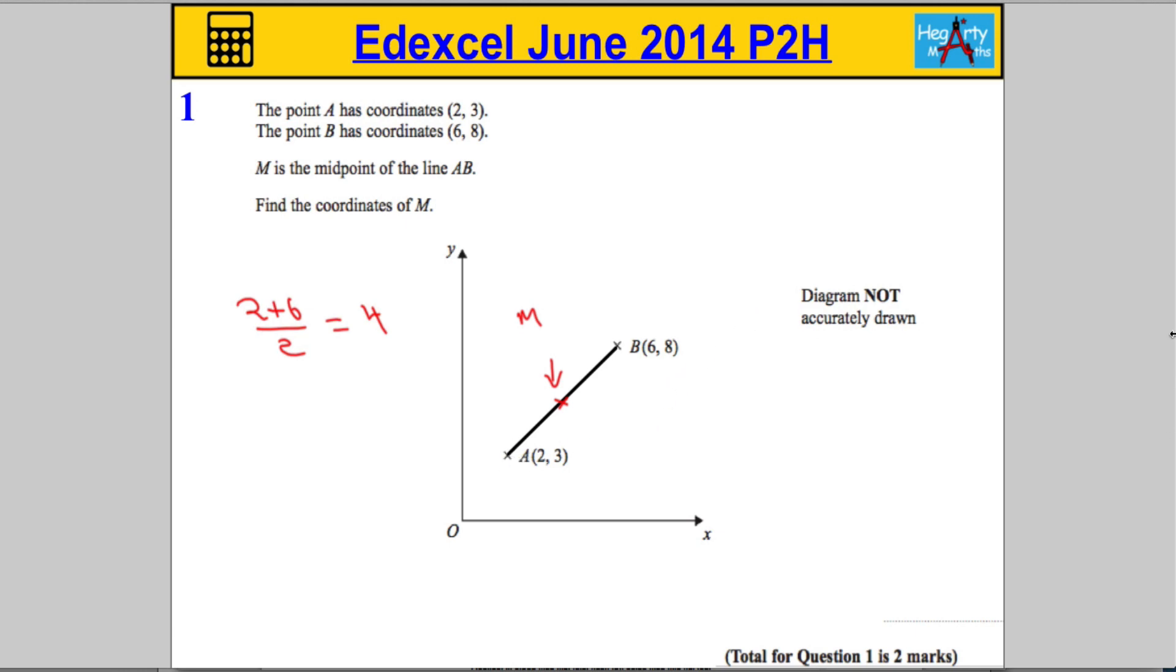And then I'm going to do the same with the Y coordinates. So, take the Y coordinate here and the Y coordinate here. We're going to add them together. 3 plus 8, and then divide that by 2. 3 plus 8 is 11. 11 divided by 2 is 5.5.